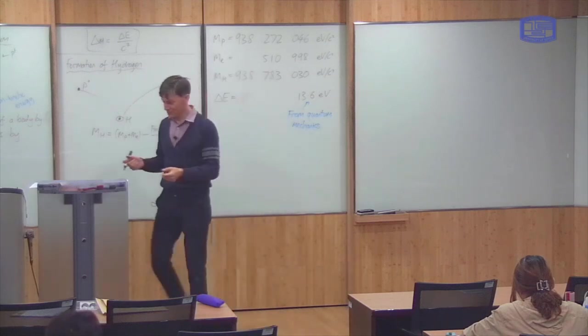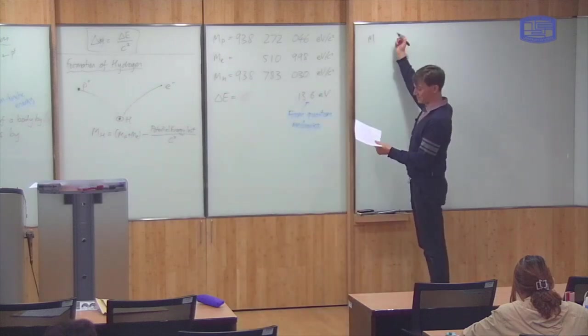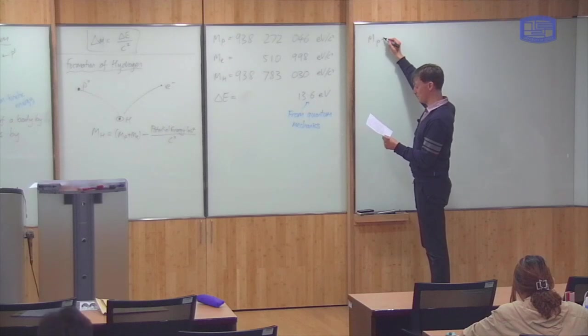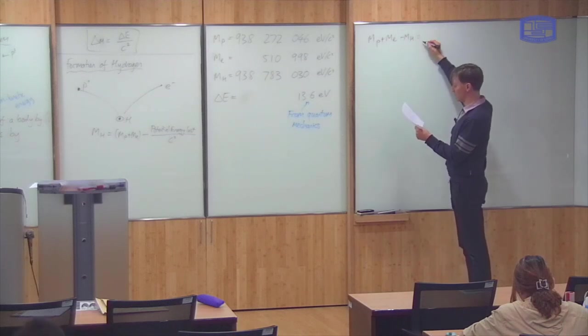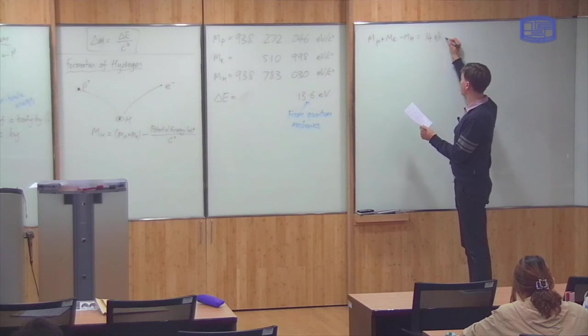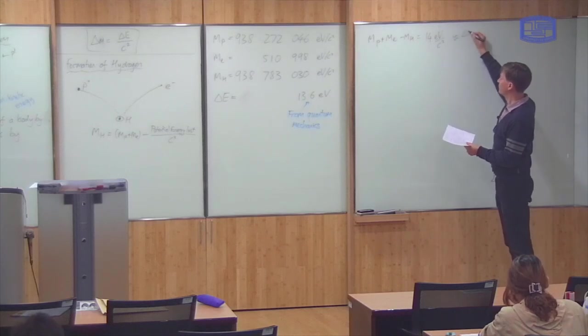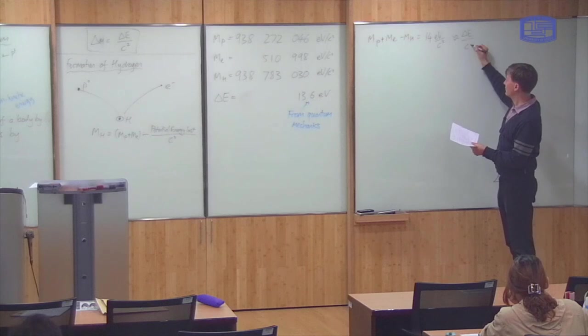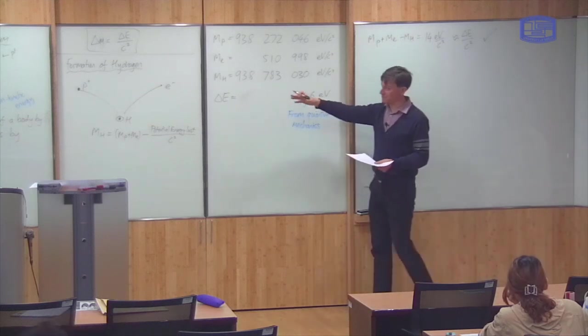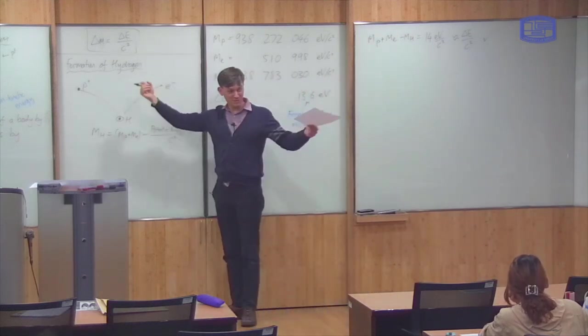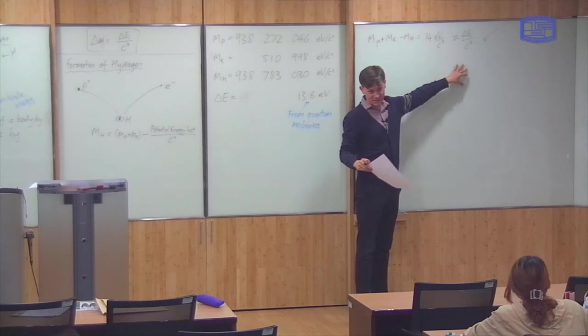So those are the data, and now you can check. MP plus ME minus MH comes out as being 14 electron volts over c squared from the data here. And indeed, this is approximately equal to delta E, which is 13.6 over c squared. So, that is some evidence then that this equation here is right. As the particles come together, they lose potential energy, and you can indeed measure the change in mass as a result of the loss of potential energy.